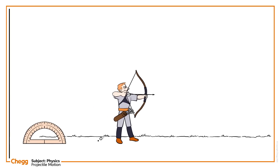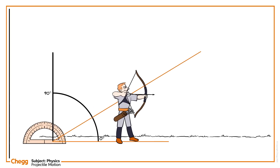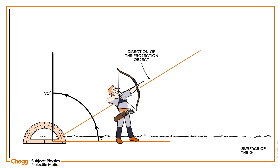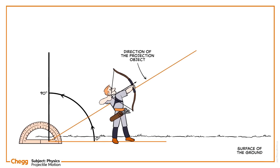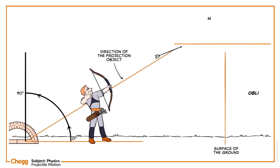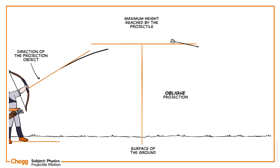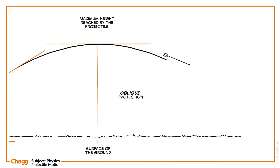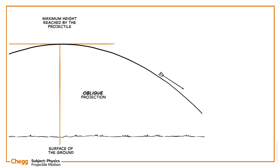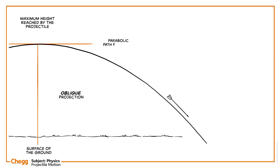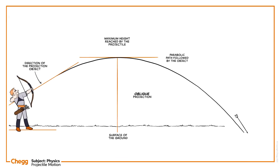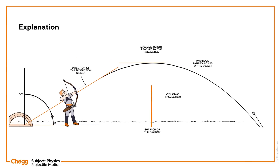Similarly, when the object is projected at any angle between 0 degrees and 90 degrees relative to the surface of the ground, the scenario is called oblique projection. In this projection also, the object follows a parabolic path while falling onto the Earth's surface.